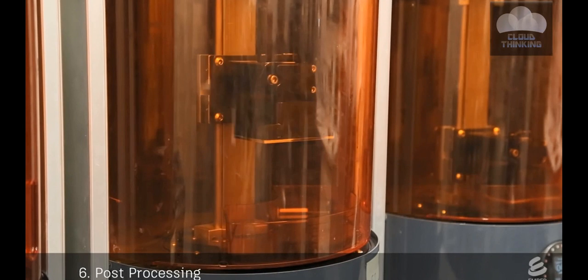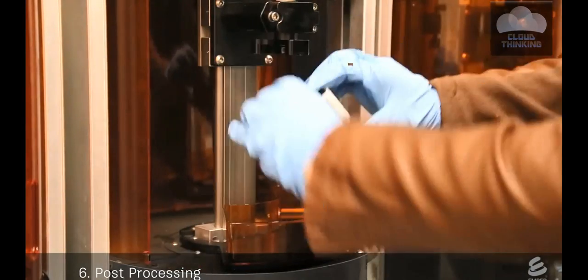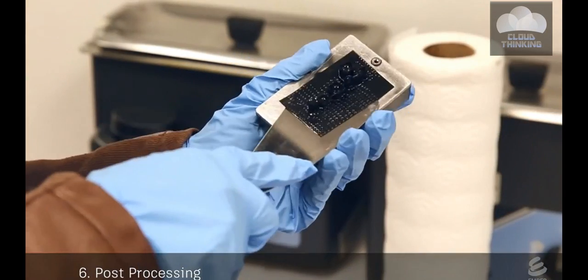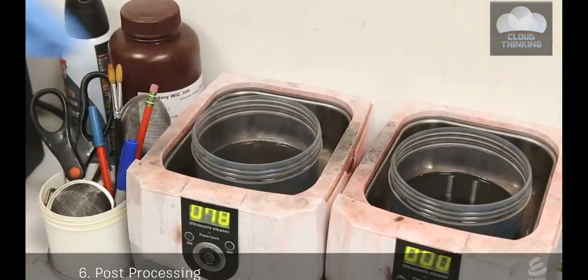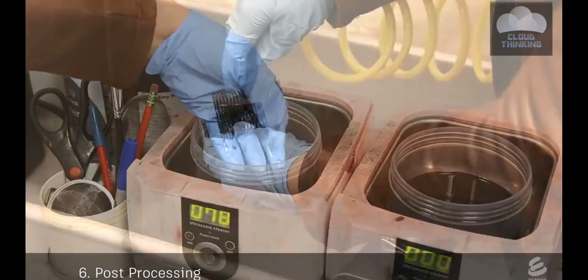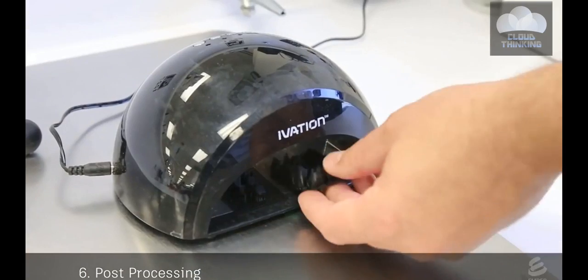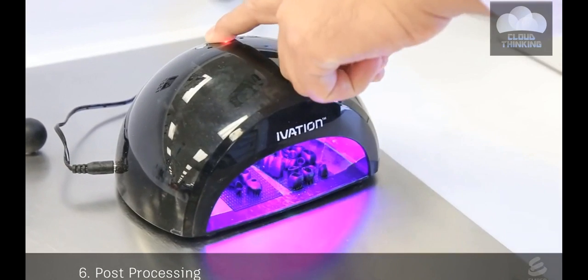After the print is done, a tech removes the build head from the printer, scrapes off the print, washes it in alcohol, and dries it with an air gun. Then the print goes through a post-curing step under a UV lamp.